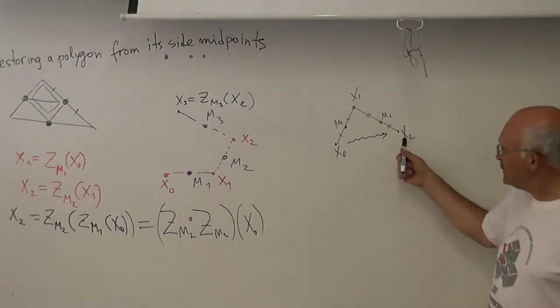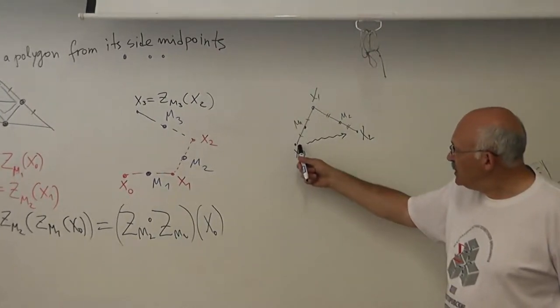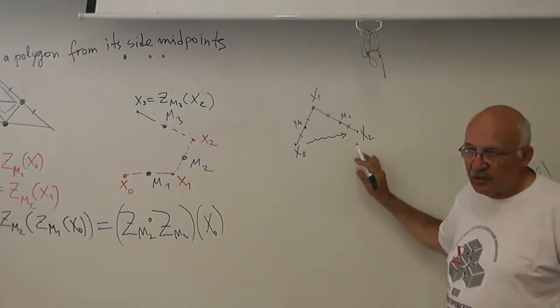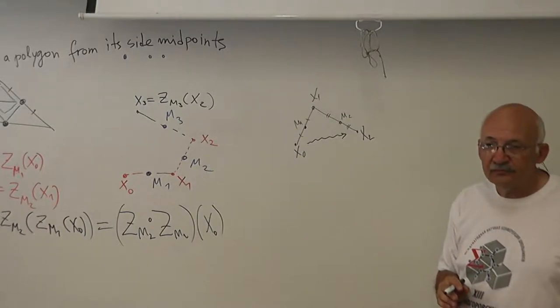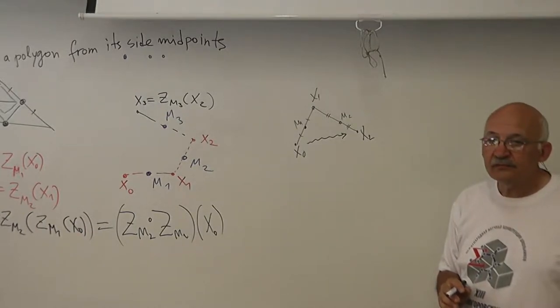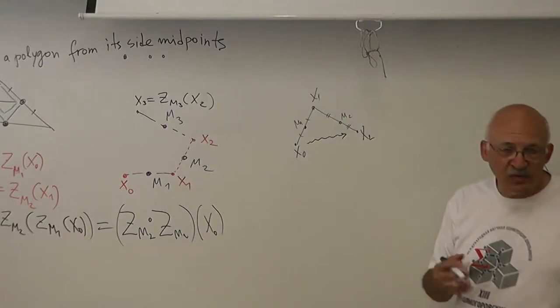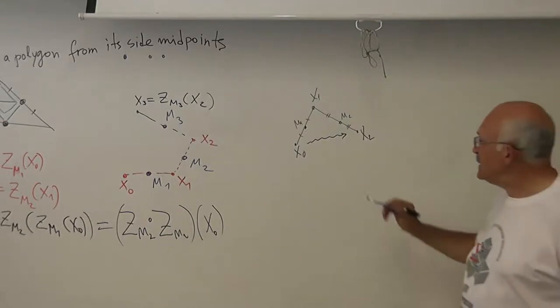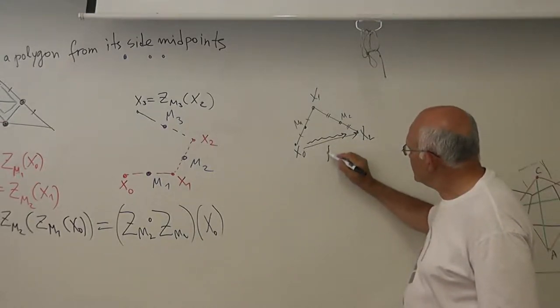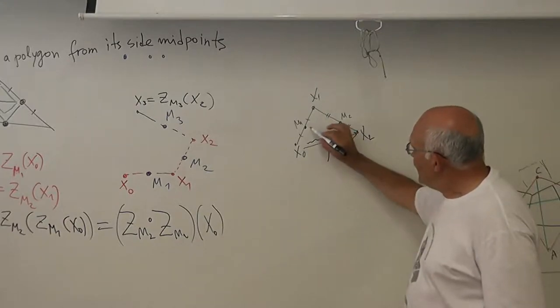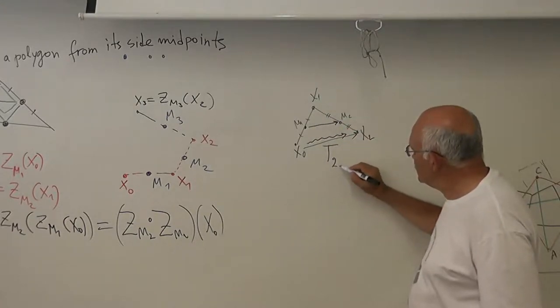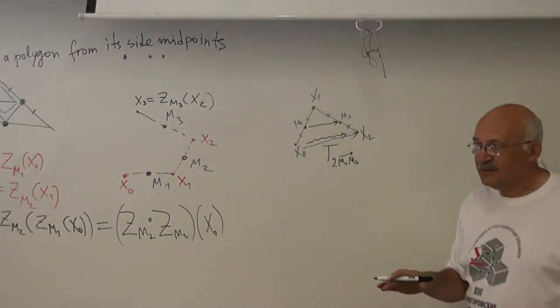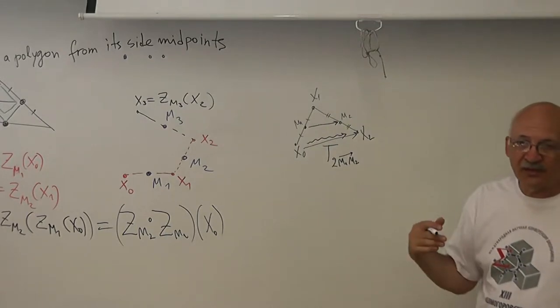Yes, but what is the result? If I want to go from x0 to x1, let's say m1, m2, and perform it on x0. So how do we call this translation? Translation. Yes. This is translation by the vector 2m1m2. Right? Everyone understand. Yes. So after two steps we get the translation.